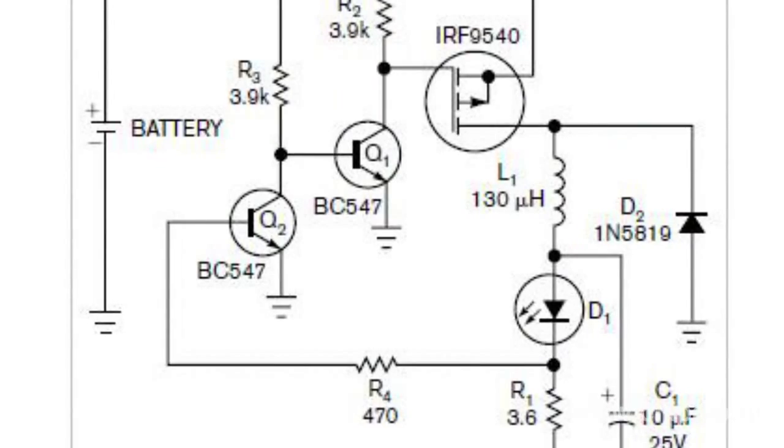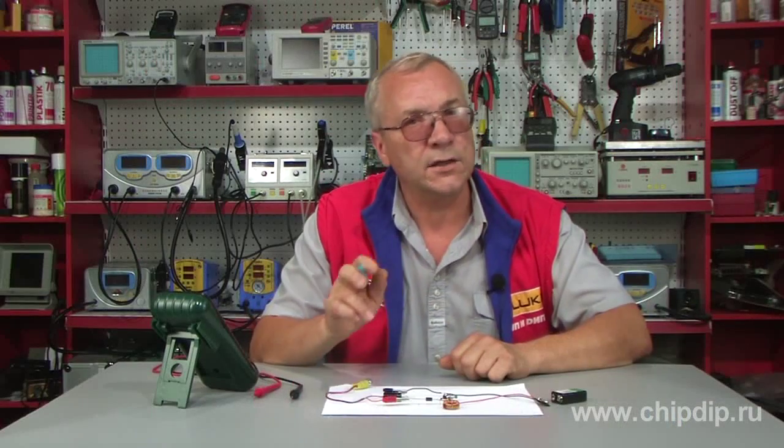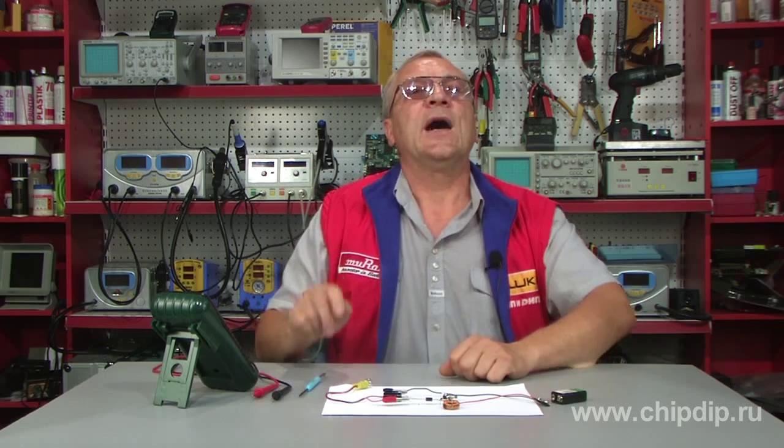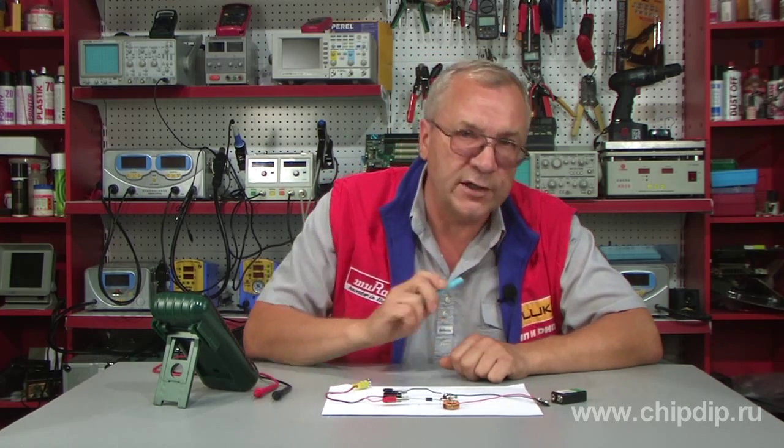As a storage element, an inductor, a battery, or a capacitor is used. Below there is an example of how a switching regulator can be used as a DC-DC converter, with an inductor as a storage element.